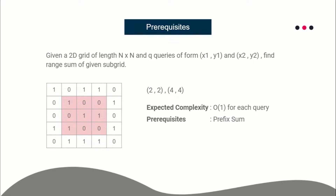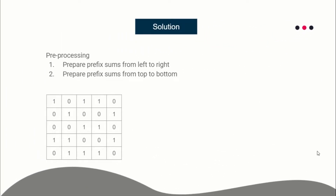The prerequisite is that you should have knowledge of prefix sum. We will be solving this problem using prefix sum, extending that knowledge to handle 2D range sum queries. The approach involves two preprocessing steps: first, prepare prefix sum from left to right, then prepare prefix sum from top to bottom. After these two steps our prefix sum array is ready, the grid will be transformed, and we'll be able to answer queries in constant time.